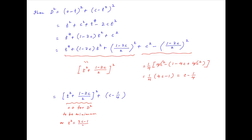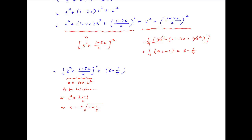This happens when t² + (1 − 2c)/2 = 0, or t² = (2c − 1)/2, or t = ±√(c − 1/2). Therefore d achieves its minimum when t = ±√(c − 1/2), and the minimum value of d² is equal to c − 1/4. In other words, the shortest distance between the given point and the parabola is equal to √(c − 1/4), which is the required answer.